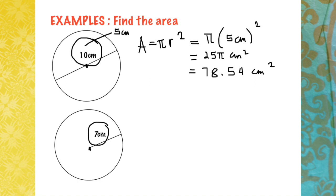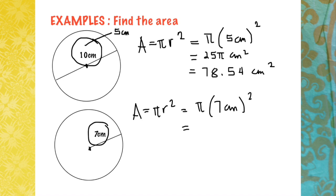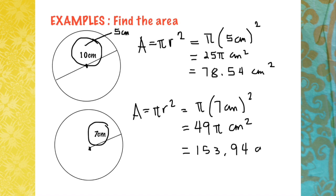In the second example, you are given 7 cm as your radius. Using the area formula A = πr², and substituting the value, we get π times 7², which is 49π cm² as the exact value. The estimated value would be approximately 153.94 cm².